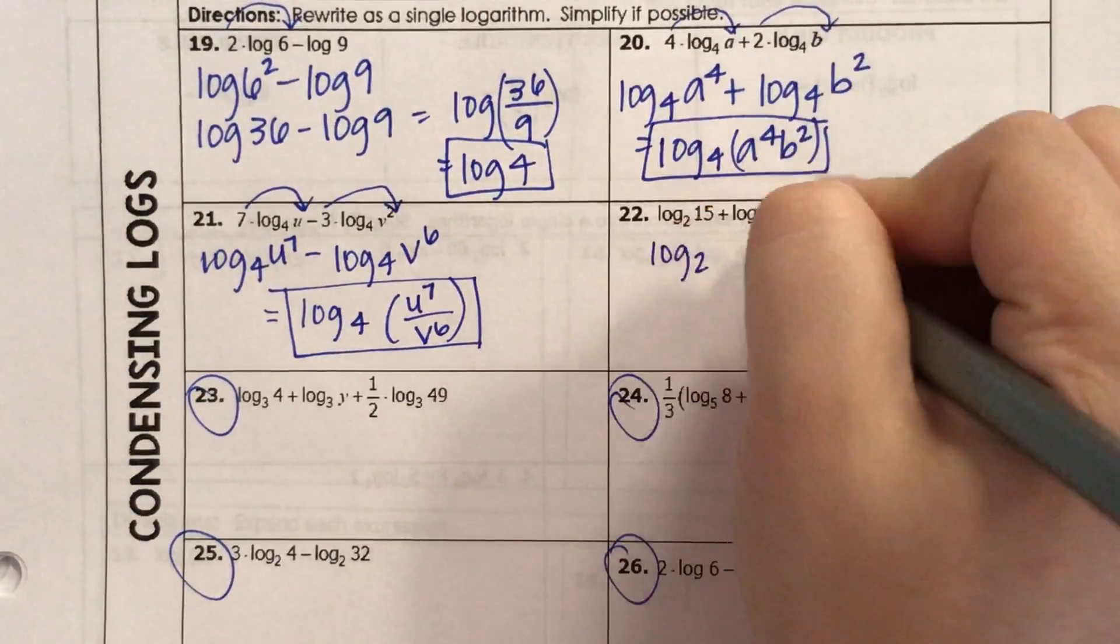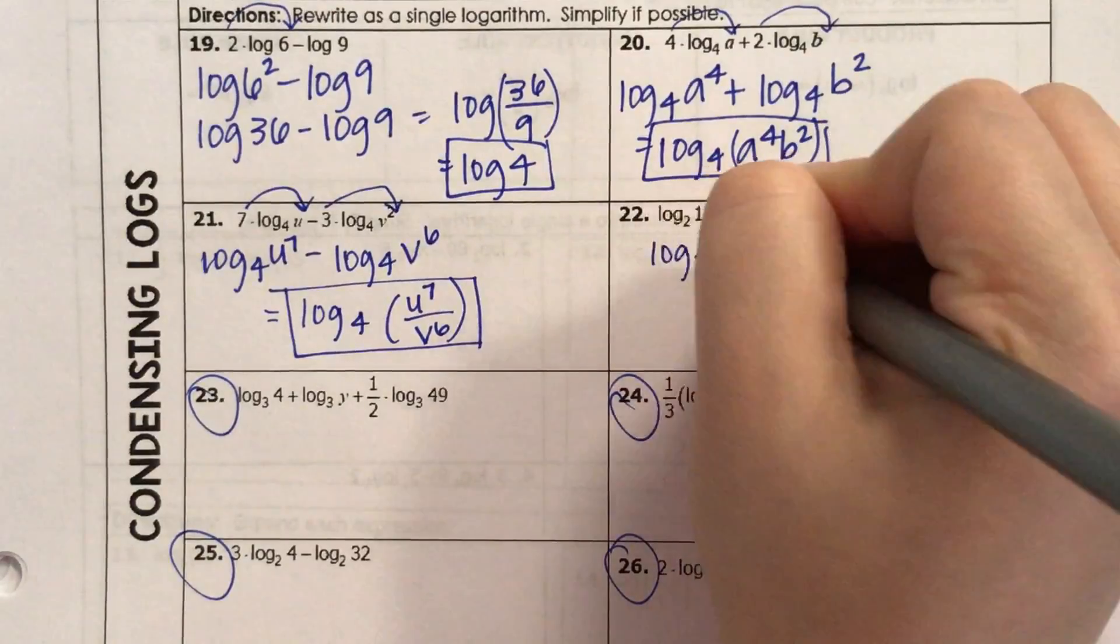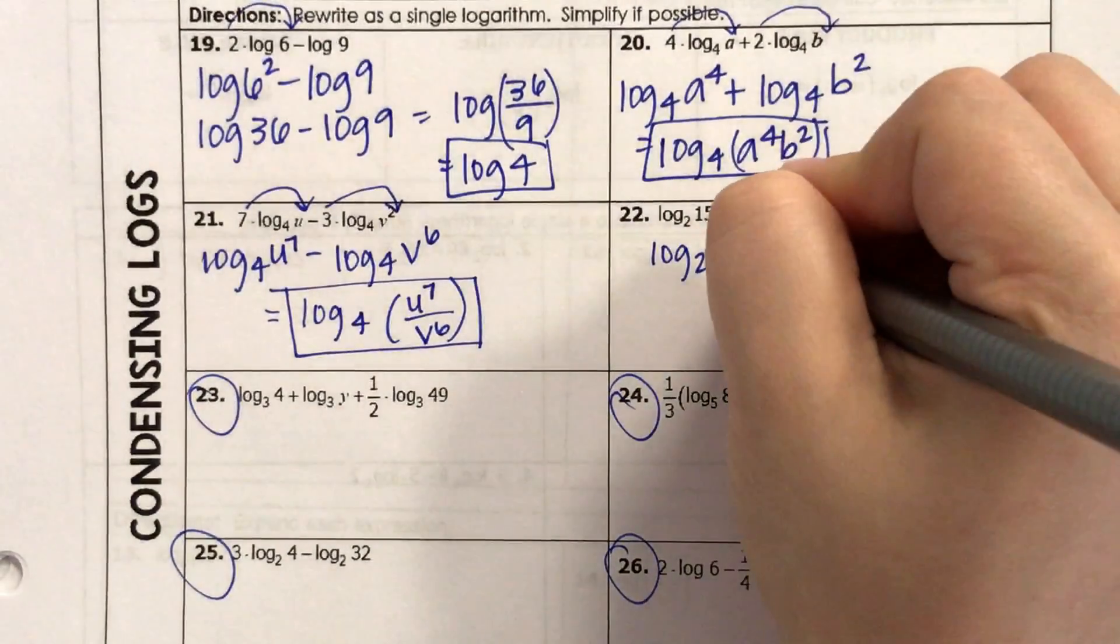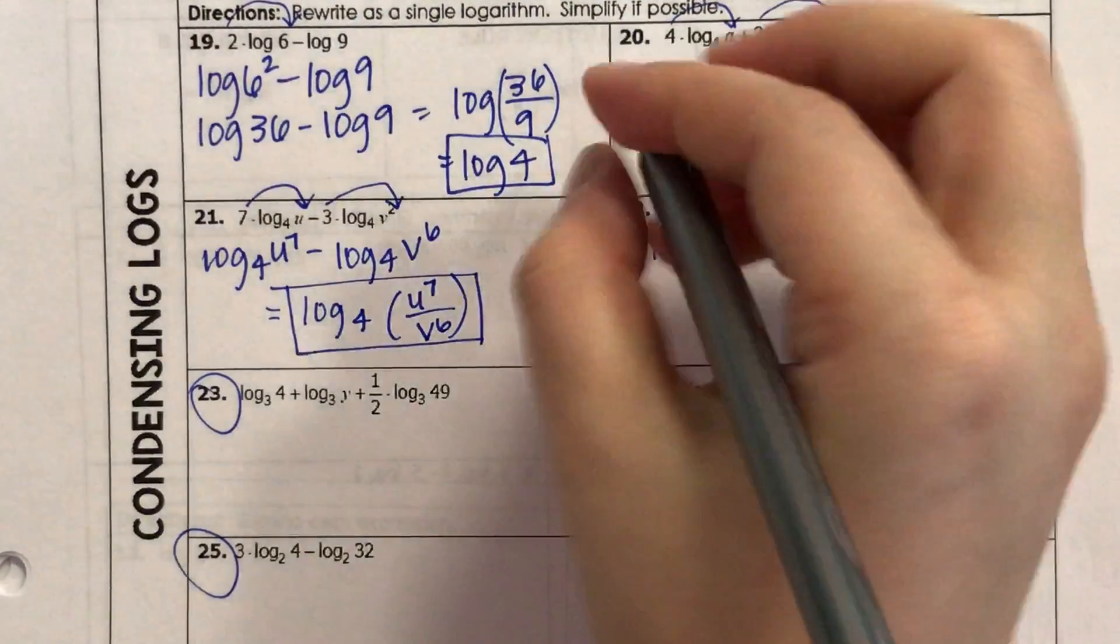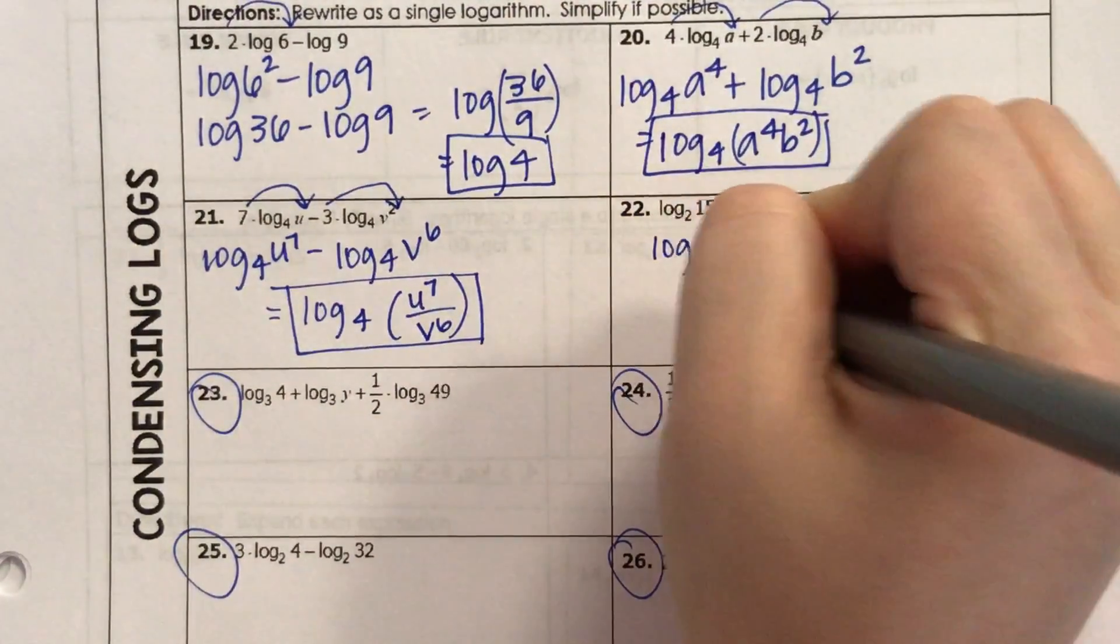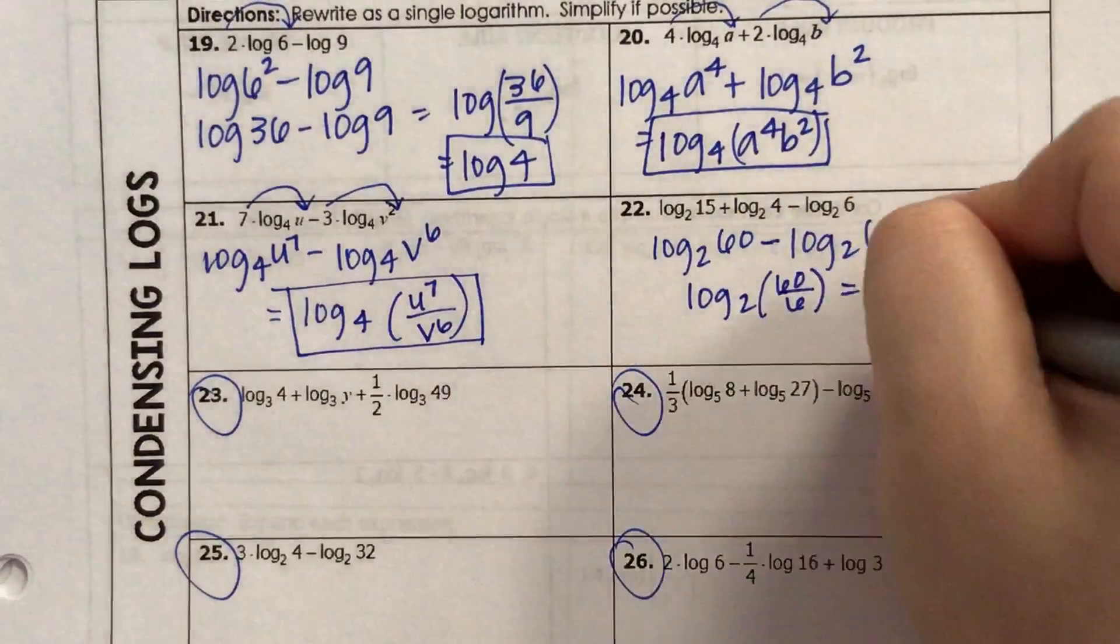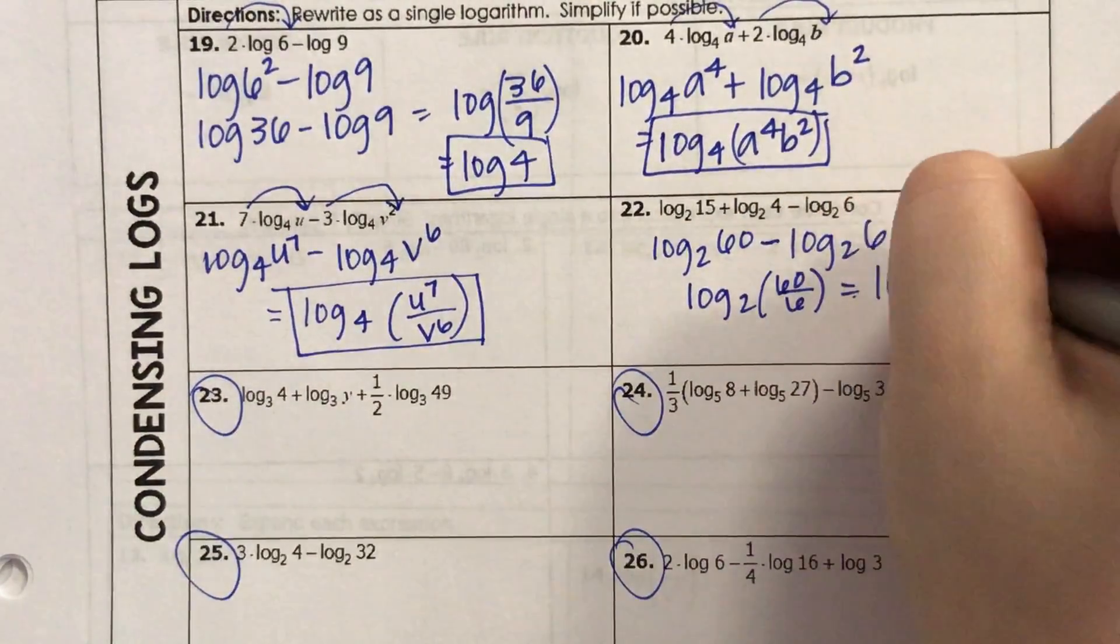Log base 2, 15 times 4 is 60, minus log base 2 of 6. Now I know I can change this to a quotient. Log base 2 of 60 over 6, which is really log base 2 of 10.